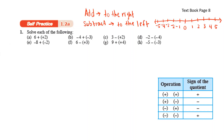Take note: when you add a number, the number moves to the right, meaning it gets bigger. So from 0, if you plus 2, it will move to the right: 1, 2. From negative 4, if you plus 2, it will move to the right: 1, 2. So it will be negative 2.